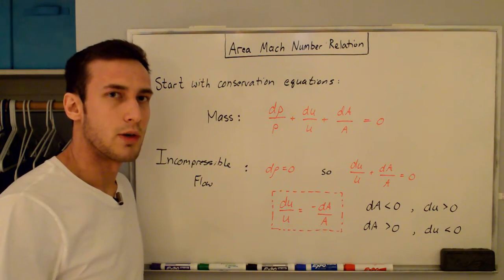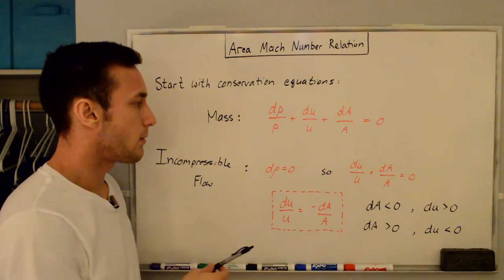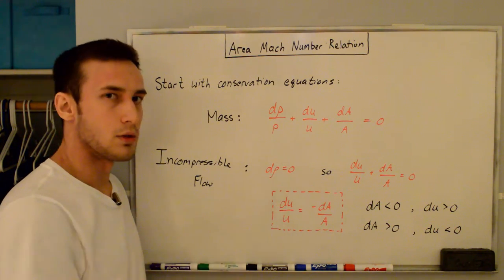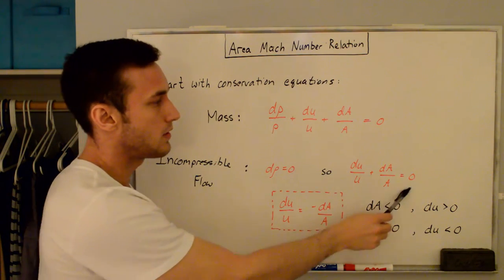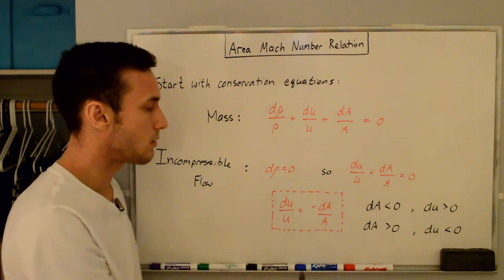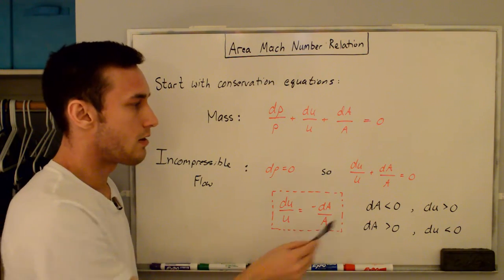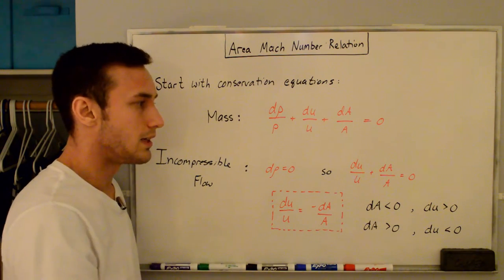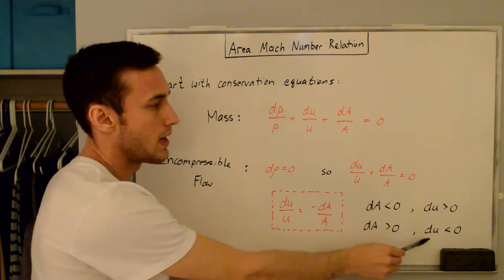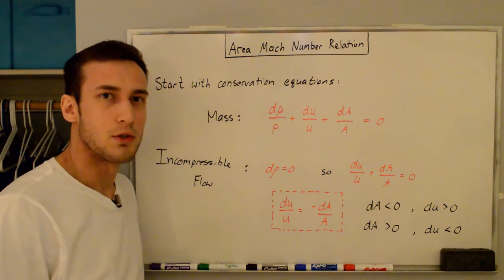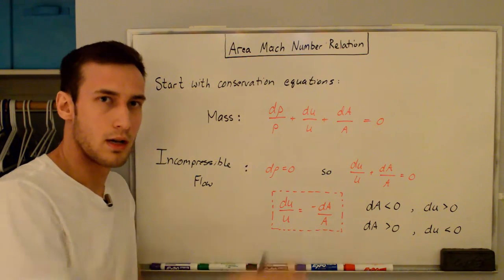First let's go over what happens for an incompressible flow, in which case we only need to look at the mass conservation equation. For an incompressible flow, the change in density is equal to zero, which means the density is constant, so that term goes away. Moving the area term to the other side, you can see that for a decreasing area (dA < 0) we get an increase in velocity, and conversely for an increase in area we get a decrease in velocity. This is intuitive: if you want to speed up the flow, decrease the area; if you want to slow it down, increase the area.